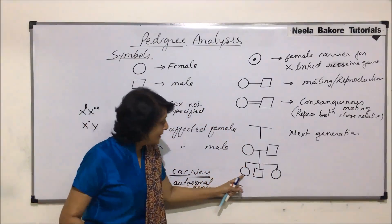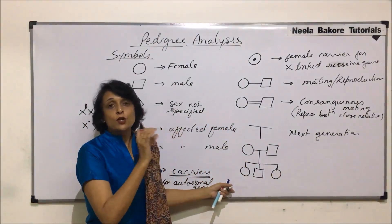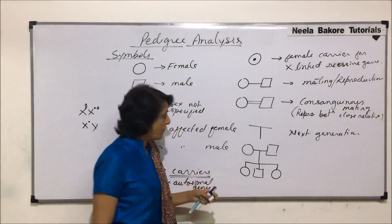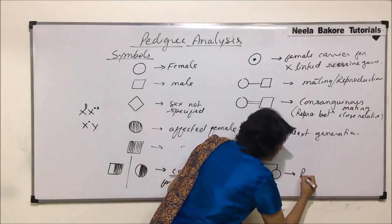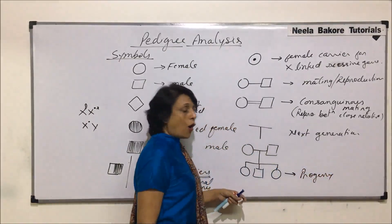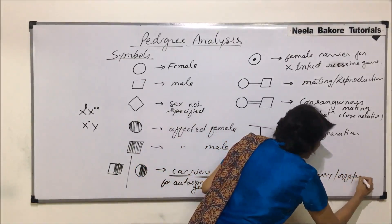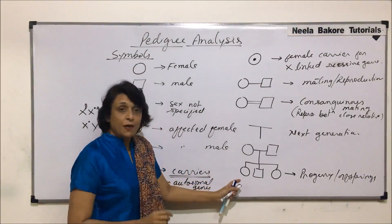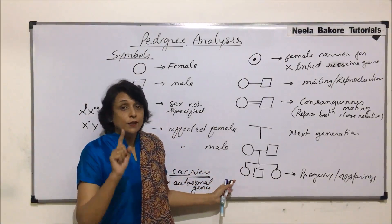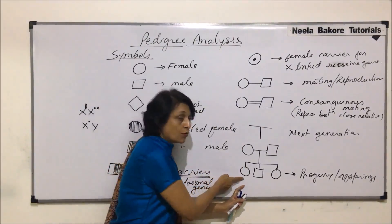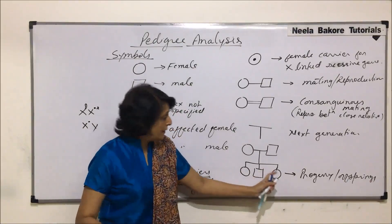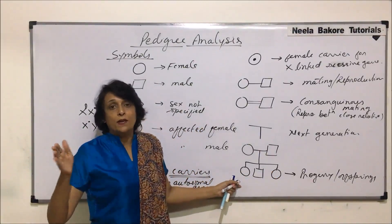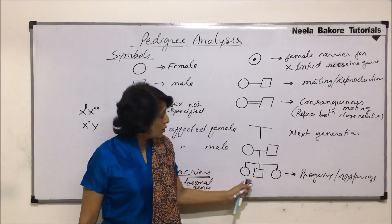Individuals which are in the same band are members of the same generation and can be termed as progeny — meaning the next generation offsprings. We draw them in the same birth sequence: first, second, and third child in order. So if this couple has three children, the first female child is drawn here, the second is a boy, and the third is a girl again — drawn in that same sequence.